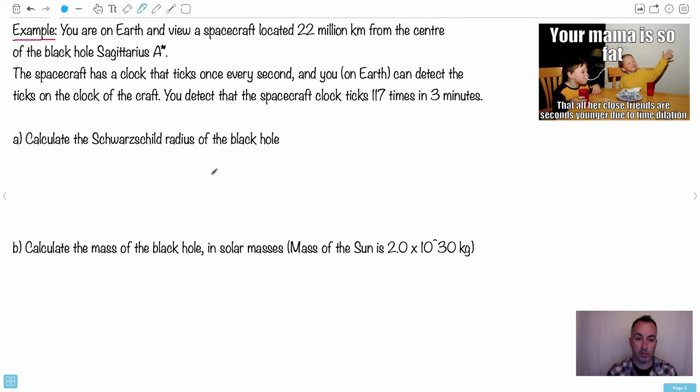We're going to end up calculating the Schwarzschild radius of the black hole, and we're going to find out the mass of the black hole. This is going to be at the center of our own galaxy. Our own galaxy, where we live, called the Milky Way, at the very center of it, it's a place called Sagittarius A star. Oddly enough, it's in the constellation Sagittarius. At the very center of our galaxy, there's what we call a supermassive black hole. You're on Earth and you view a spacecraft located 22 million kilometers from the center of the black hole Sagittarius A star. So that's your distance here.